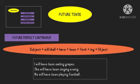Next we have future perfect continuous tense, used to denote an action that will be taking place and will continue for quite some time. The formula is: subject + will/shall + have + been + verb + ing + object. The sentences are: I will have been eating grapes, she will have been singing a song, we will have been playing football.